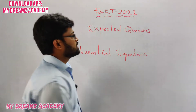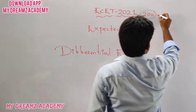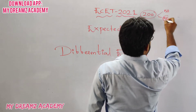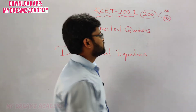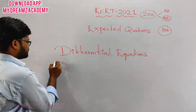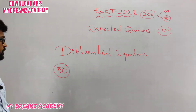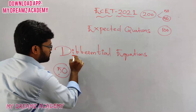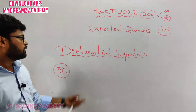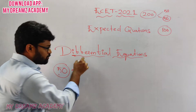The total E-SET paper is for 200 marks. In this 200 marks, 50 marks for maths, 50 marks from physics, as well as chemistry, and the remaining 100 marks from technical. In maths, which contains total 50 marks, 10 marks is coming from differential equations — as it did in the last year 2020 paper.